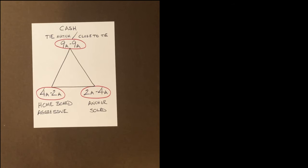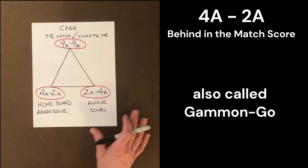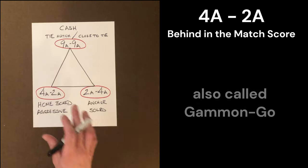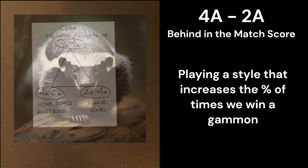At 4 away 2 away, we're interested in building a home board. We're going to play more aggressive to make a home board point, and it's a very specific strategy. Very aggressive. A nickname I have for this is, you're in honey badger mode when you're 4 away 2 away.